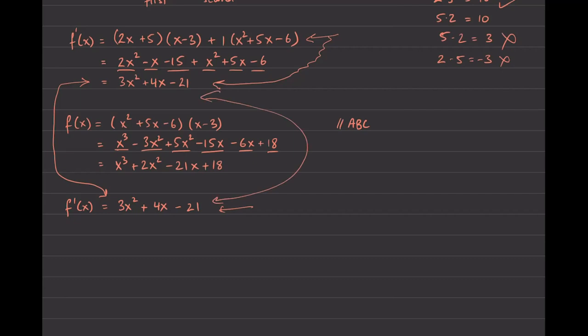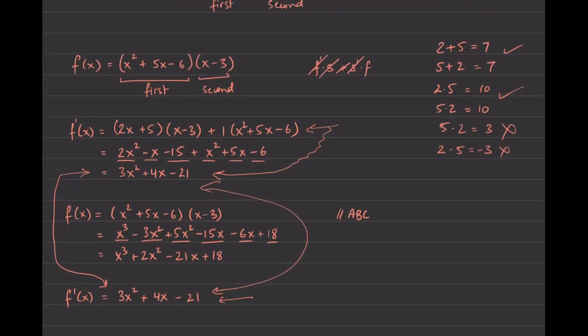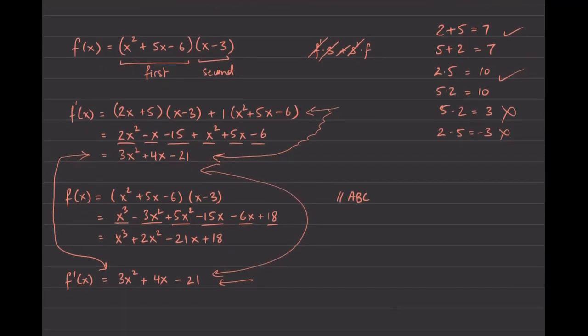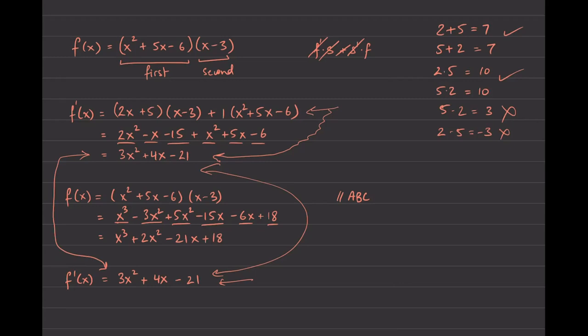You could also find the derivative using the limit definition — it would be quite tedious and I won't ask you to do it. But as a multiple choice question, you might be asked which techniques could work. The power rule works because you can FOIL everything out; the product rule obviously works because it's a product; and the limit definition could work too. A question might ask which technique cannot be used, with three valid options and one invalid one.